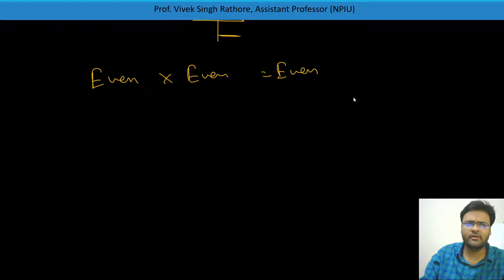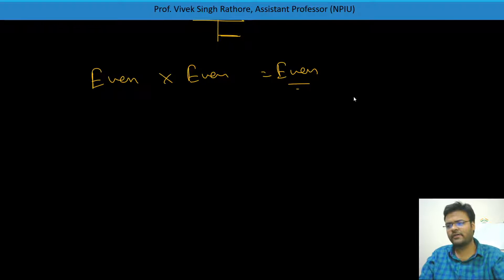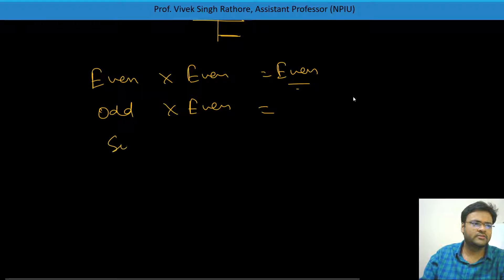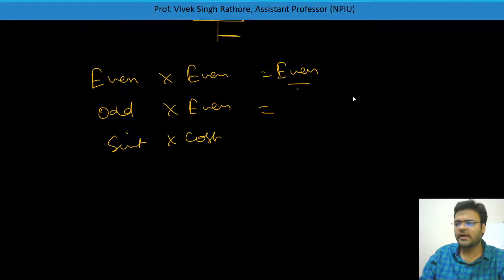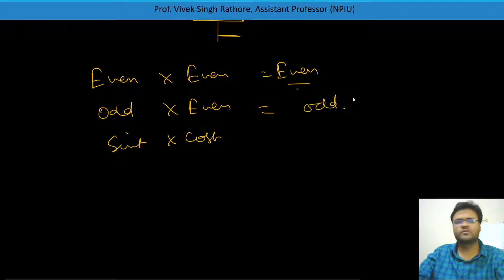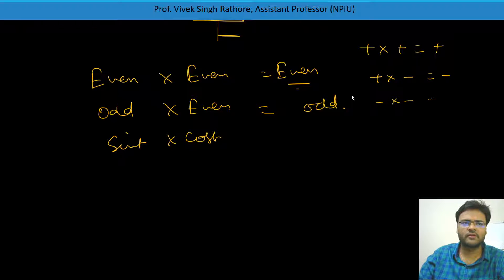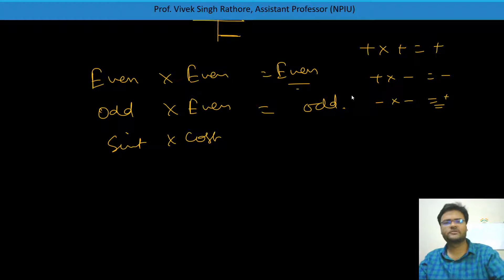You can verify: even times even also gives an even signal. And odd times even — like sin(t) times cos(t) — will give an odd signal. You can treat it like signs: plus times plus gives plus (even × even = even), plus times minus gives minus (even × odd = odd), minus times minus gives plus (odd × odd = even).